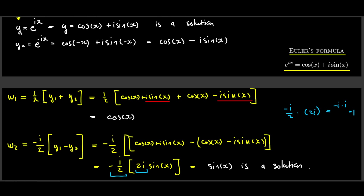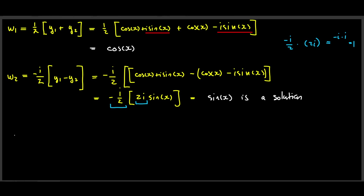Now we can solve the equation fully. The general solution is y = c1·w1 + c2·w2 = c1·cos(x) + c2·sin(x). This works because cos(x) and sin(x) are two linearly independent solutions, and since we are dealing with a second-order homogeneous equation, we've now found all solutions. In the next video we'll discuss the generalization to constant-coefficient equations of arbitrary order.